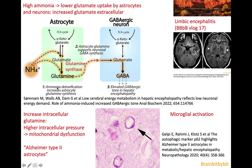The ammonium is increased in the entire brain, but there is selective vulnerability of certain areas. The cingulate and insular involvement resembles limbic encephalitis a little bit, but in hepatic encephalopathy the hippocampus and amygdala are spared.